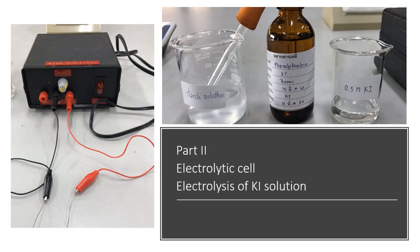We move on to part two: the electrolytic cell. We're going to see the electrolysis of potassium iodide solution. As introduced, for the electrolytic cell we need to apply electricity to make the non-spontaneous reaction occur. We need a power supply — the red is the positive side, the black is the negative side. The wire clips onto nichrome wire as the electrode, rather than using any metal strip.